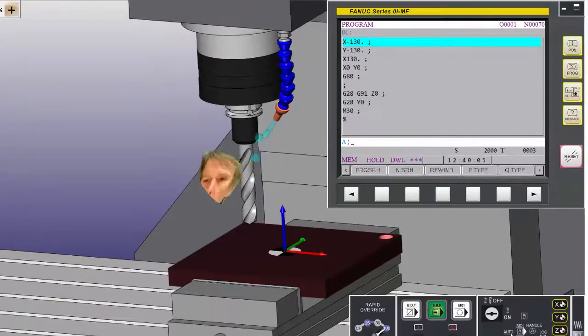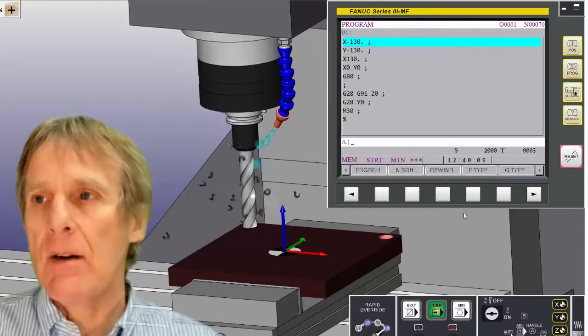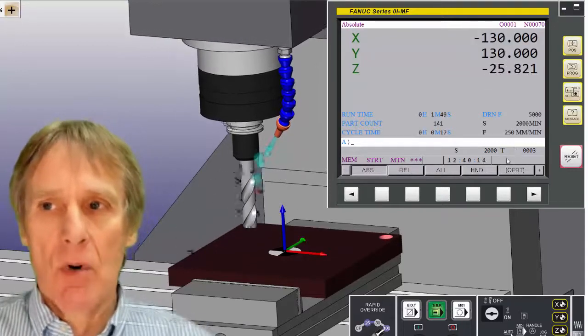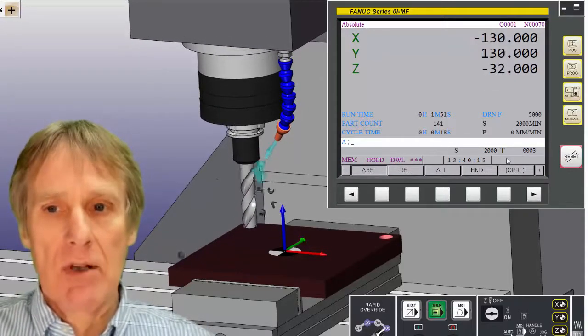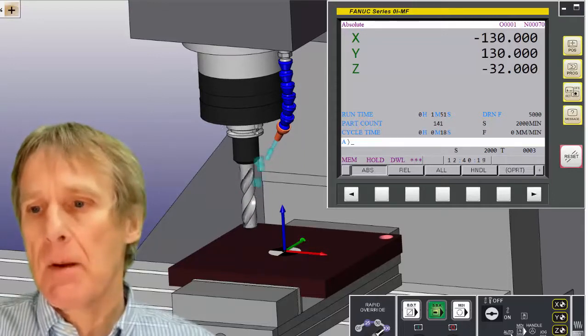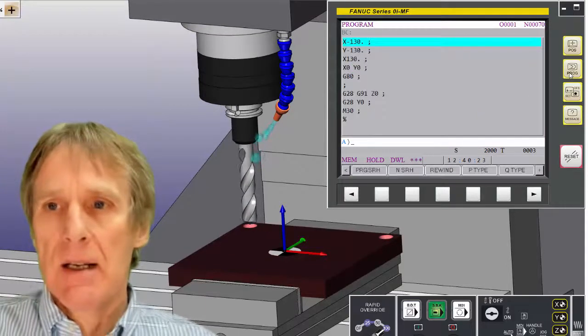Okay, so let's carry on with the part. So I'm going to drill another hole. Again, I can look at my position display—it's telling me where I am. My Y is still at 130 and my X is at minus 130, so I can see that. Let's bring this drill out of this hole.